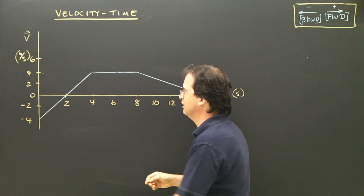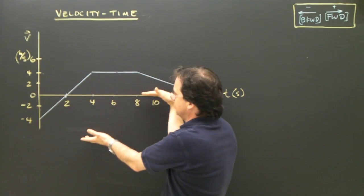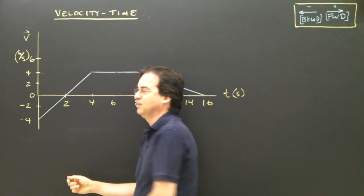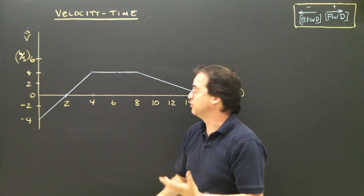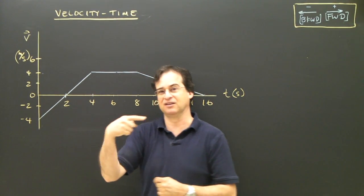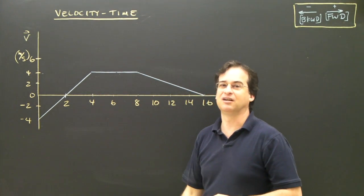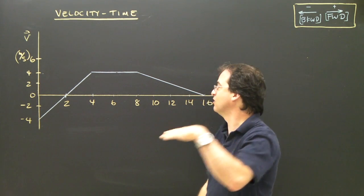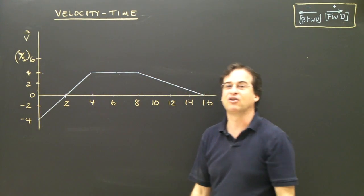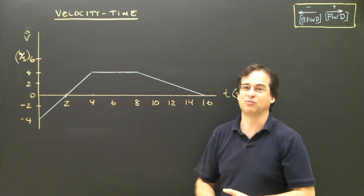Let's see if the slopes confirm this. The slope from 0 to 4 seconds is positive — even though it's below the time axis, it's still sloping upward, so it's a positive number, meaning I'm accelerating east. That agrees with what we described. From 4 to 8 seconds, the slope is 0 — a horizontal line — so acceleration is 0, meaning constant speed. That also agrees.